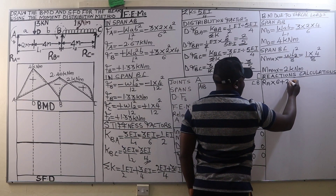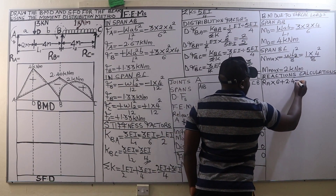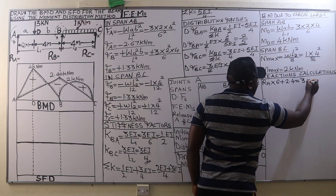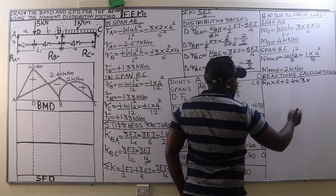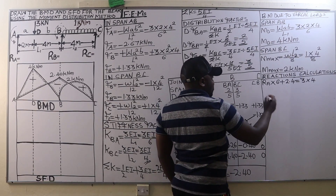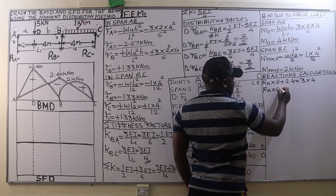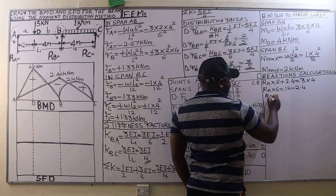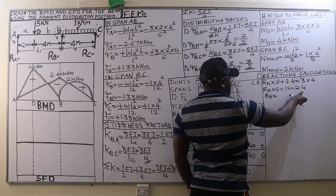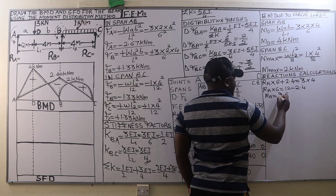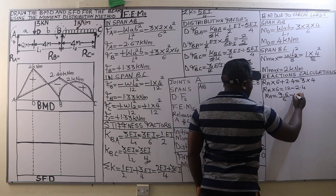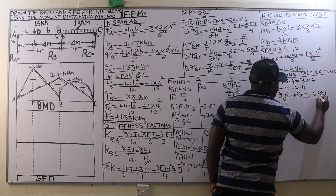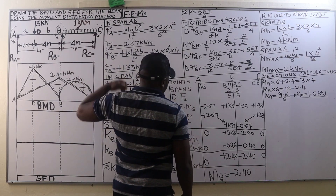The bending moment at B equals the moment from the point load at D of 3 kilonewtons multiplied by its distance to support B, which is 4 meters. So RA times 6 equals 3 times 4, giving 12. We subtract 2.4, so RA equals 12 minus 2.4 equals 9.6, then divide by 6, giving a reaction at A of 1.6 kilonewtons.